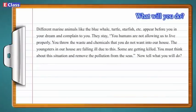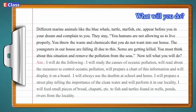What will you do? Different marine animals like the blue whale, turtle, starfish etc. appear before you in your dream and complain: 'You humans are not allowing us to live properly. You throw waste and chemicals into our house. The youngsters in our house are falling ill; some are getting killed. You must remove the pollution from the seas.' In response: I will study the causes of oceanic pollution, read about measures to control it, prepare a chart and display it on a board. I will always use the dustbin at school and home. I will prepare a street play telling the importance of clean water and perform it in our locality. I will feed small pieces of bread and chapati to fish and turtles found in wells, ponds and rivers.